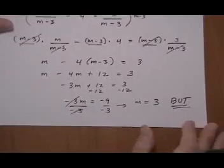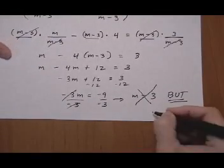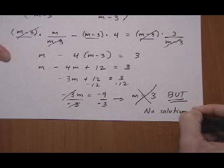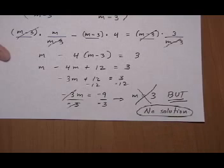When you get a solution that makes the denominator 0, cross it out. You don't want to accept it. And seeing how there is no other solution here, our only possible answer is there is no solution to this equation.